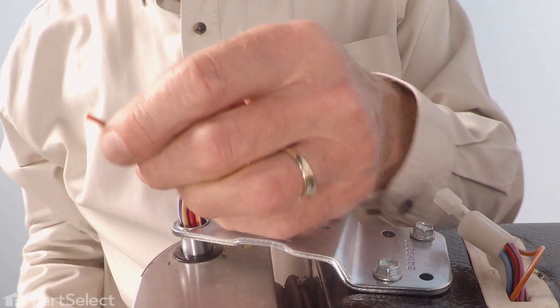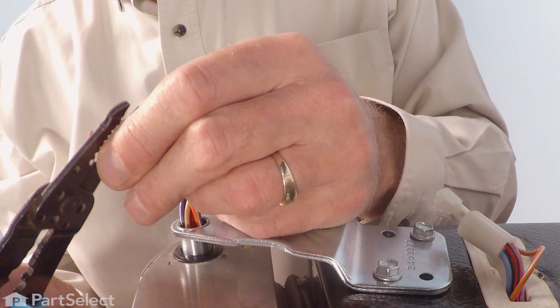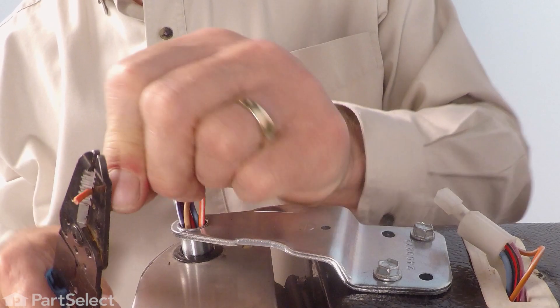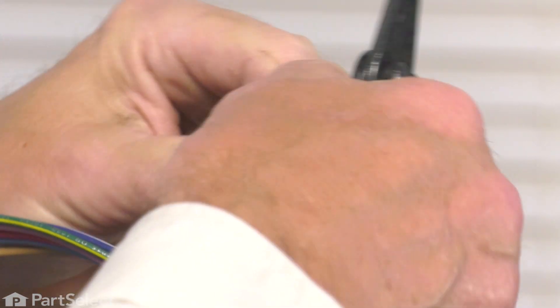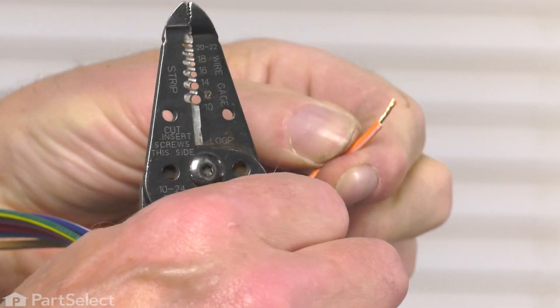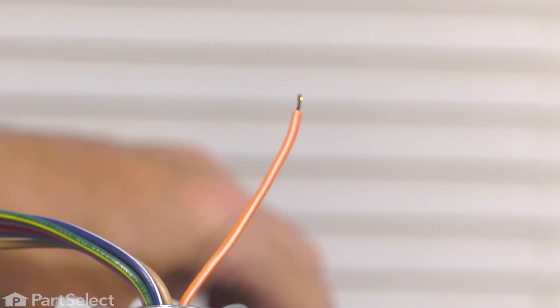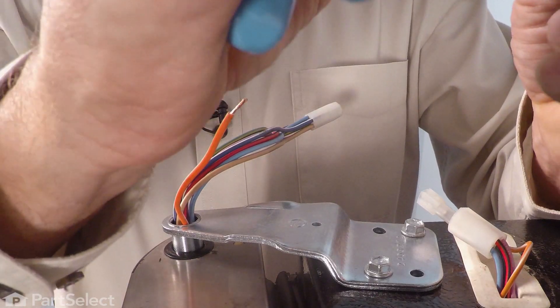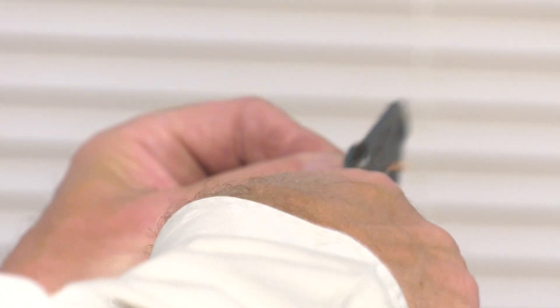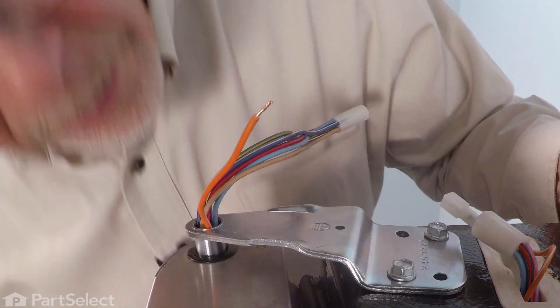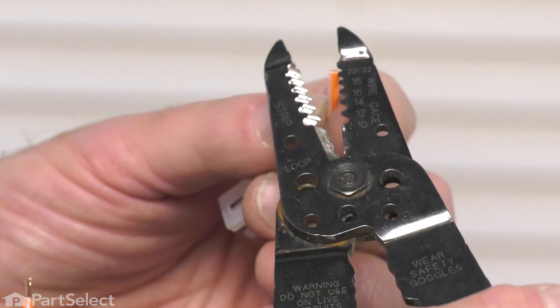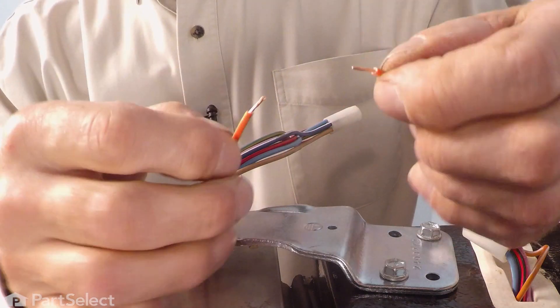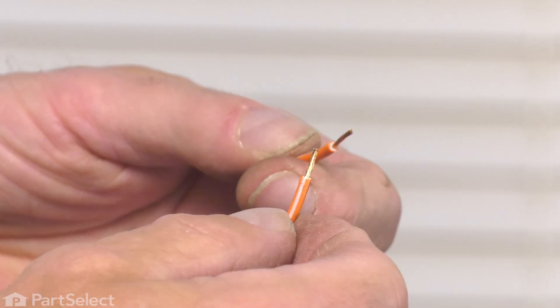Next, we'll prepare the single wire harness to crimp that back together. Start by stripping back some of the insulation on that wire, and then we'll use an inline crimp connector to attach it. Make sure we prepare the other side as well. We'll leave about a quarter to three-eighths of an inch of bare copper on each of those leads.